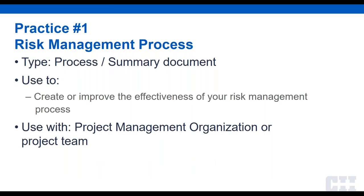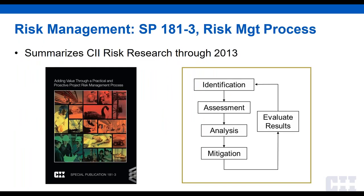The first practice is CII's risk management process. This is a process summary document developed for use if you need to create or improve the effectiveness of your risk management process. Risk management is one of those processes that is never complete on a project. The practice lays out the steps of a risk management process and summarizes CII research on risk through its publication date. If you don't have a solid risk management process on your project, you're essentially flying blind and can only react to what happens — there's no way to proactively manage your project.